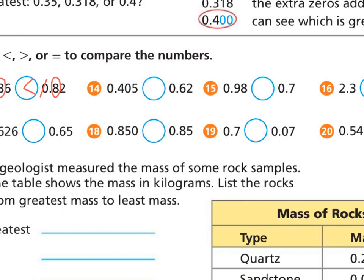Let's look at number eighteen as our second example. First, cross out my zero. Then I look at my tenths spot: eight and eight — that doesn't help me. Now my hundredths spot: five and five — still doesn't help me. Now my thousandths spot: zero and nothing. I know these numbers are equivalent — they're equal. You can finish the rest of these examples now or when the video is over.